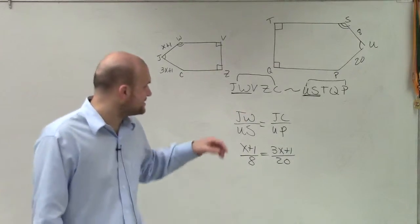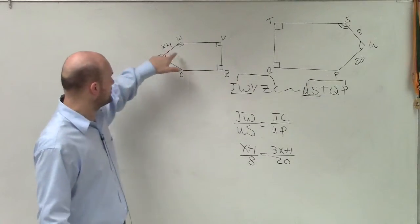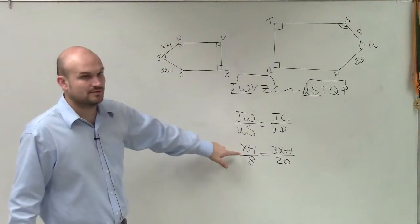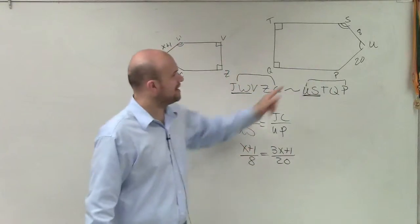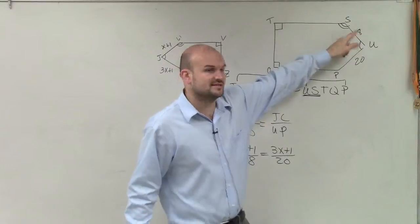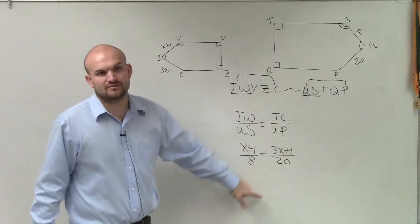So all I'm doing, John, is I'm just taking each value, JW, right here. That value is X plus 1, JW, X plus 1. Then the next one, which is US. US is right here. The length is 8. So all I did was I plugged them in for their lengths.